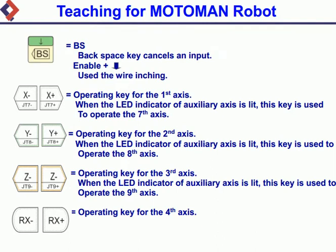BS: Backspace key, cancels an input. Enable + BS: use the wire inching. Operating key for the 1st axis. When the LED indicator of auxiliary axis is lit, this key is used to operate the 7th axis. Operating key for the 2nd axis: when the LED indicator of auxiliary axis is lit, this key is used to operate the 8th axis.